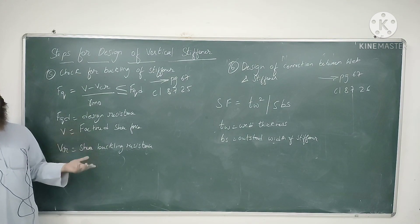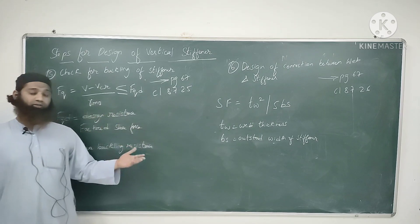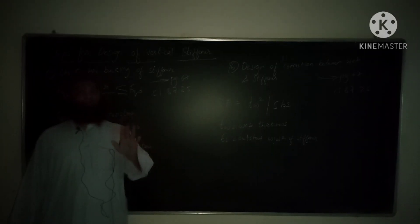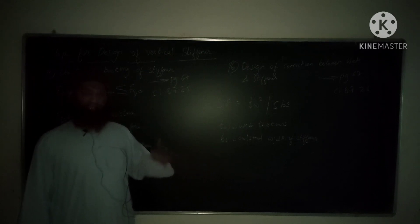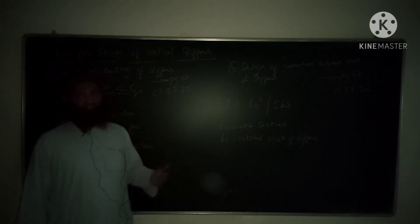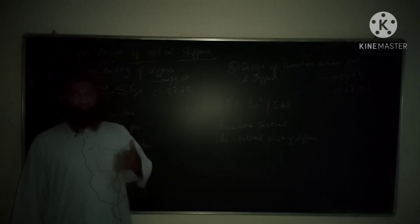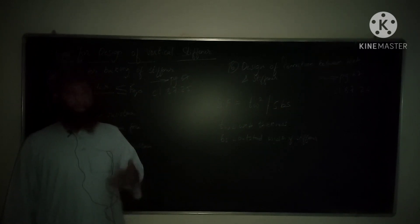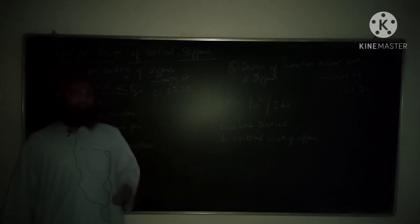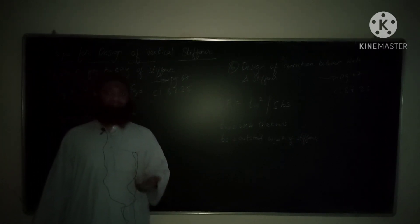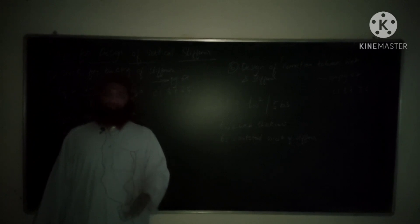To recap the steps: given data → calculate depth, thickness of web, breadth and thickness of flange → decide spacing C (D ≤ C ≤ 3D) → calculate outstand (14·tq·ε to 20·tq·ε, minimum tq = 8 mm) → calculate moment of inertia (page 66-67) → buckling check → connection design. I request you to go through these steps so that in the next class we will solve a problem related to the vertical stiffener. Please subscribe to my channel, and if you have any questions, ask in the comment section. Thanks a lot for this session.